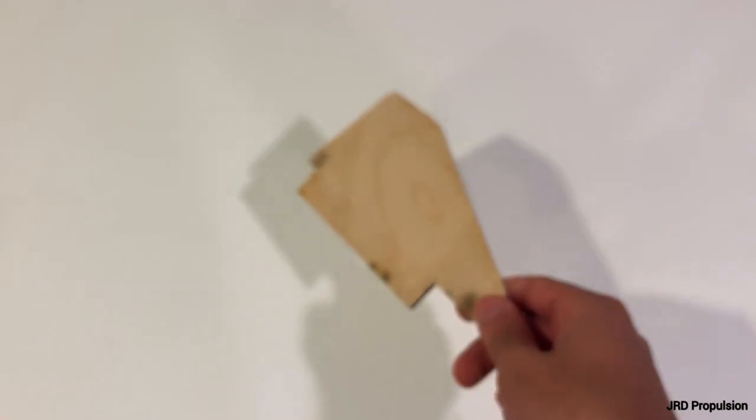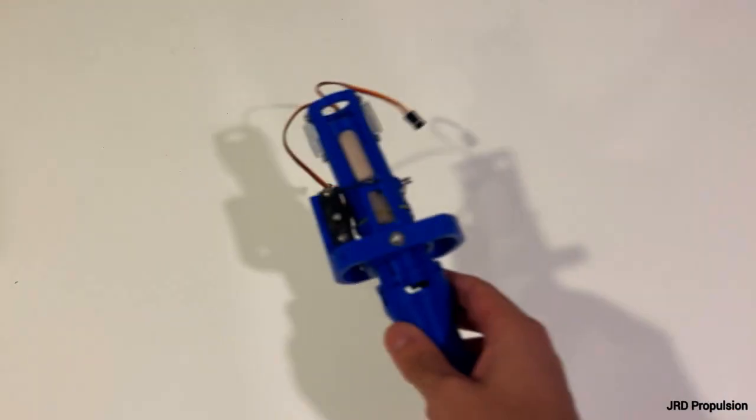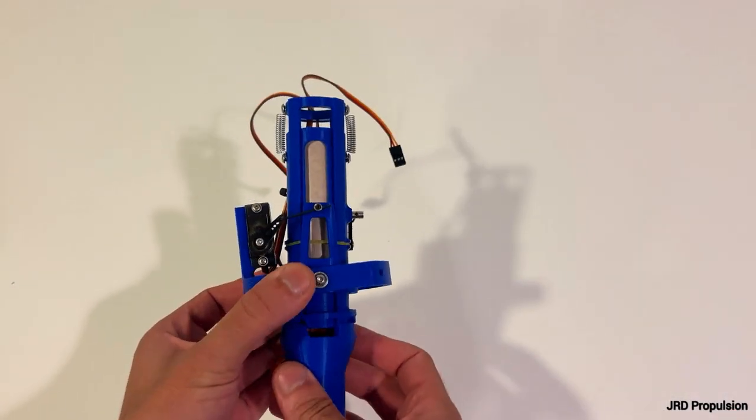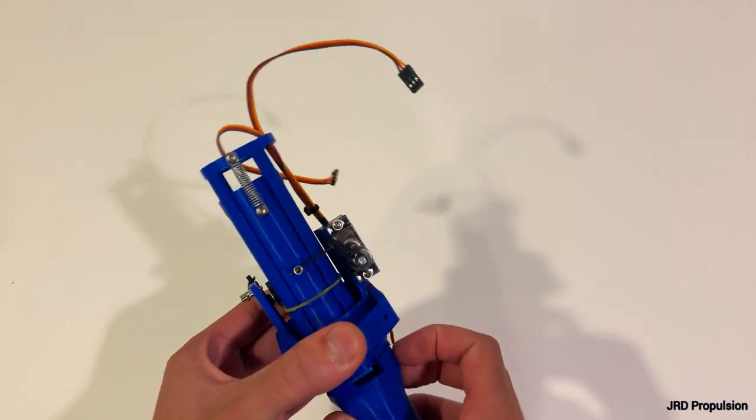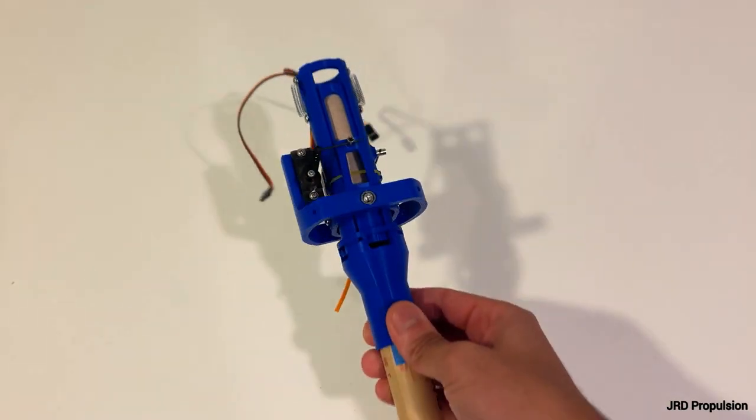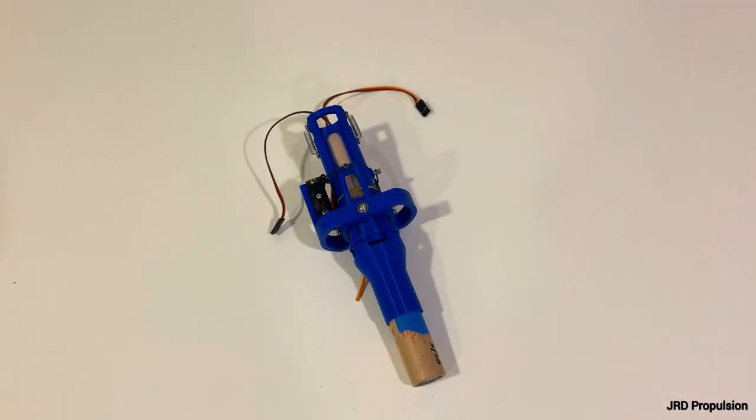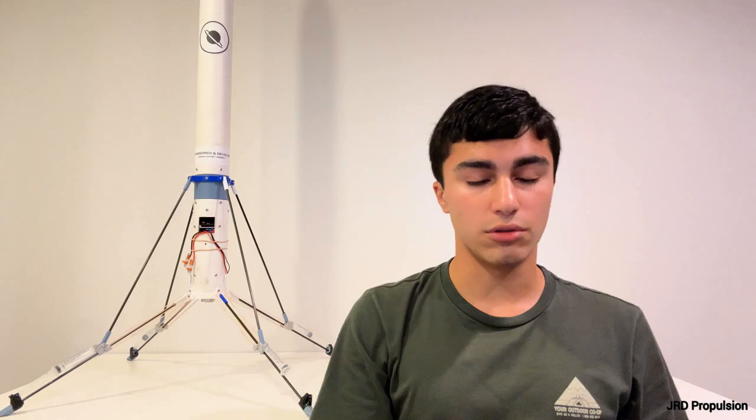The way this rocket works is different from traditional model rockets. Instead of using fins for stability, my rockets use thrust vector control. Thrust vector control allows the rocket's engine to pivot around in a gimbal, providing control over the rocket's flight path.